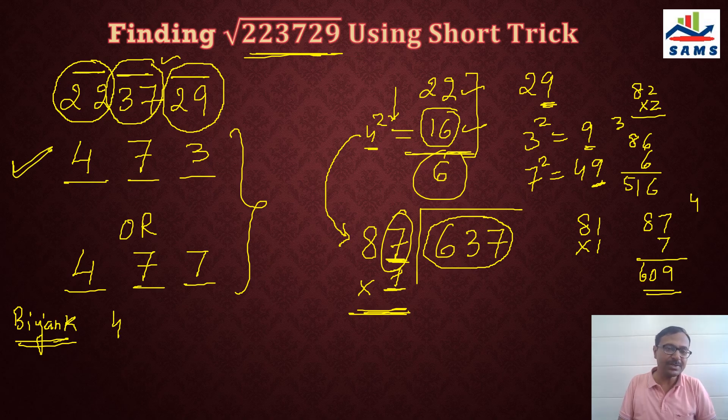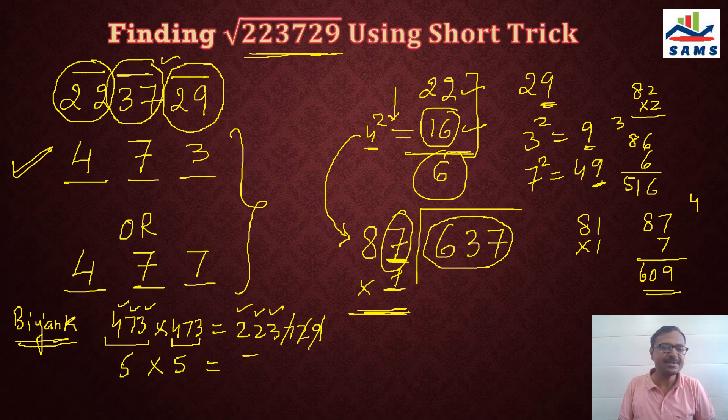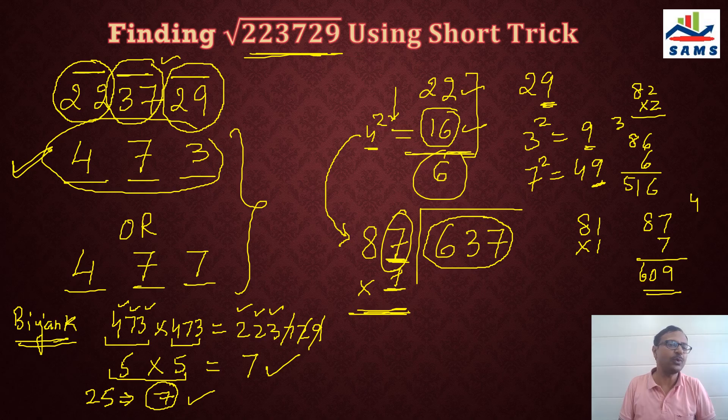If 473 is the correct answer, then 473 times 473 should give me the required number 223729. So what is the Bijank of 473? It is 4 plus 7 plus 3 which is 14. 14 is again a two-digit number, so 1 plus 4 is 5. On the right-hand side, I can cancel off the 9s. What am I left with? 2 plus 2 plus 3 is 7. Now 5 times 5 is 25, and 25 gives me 2 plus 5 which is 7. The Bijank of the left-hand side and right-hand side is exactly the same. So my answer for the square root is 473. If you check the Bijank of 477 times 477, it will never be the same because 477 is the incorrect square root.